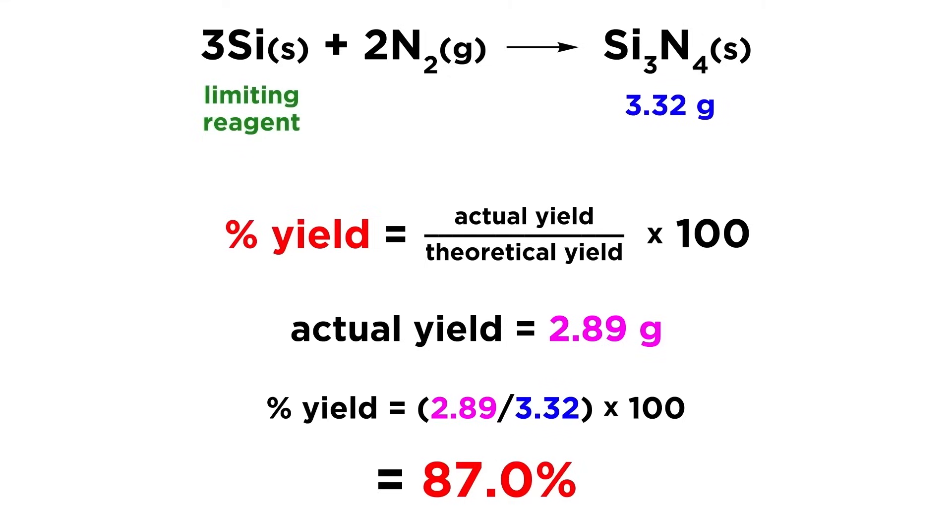This is a value that tells us something about the efficiency of a reaction, which can be quite useful.